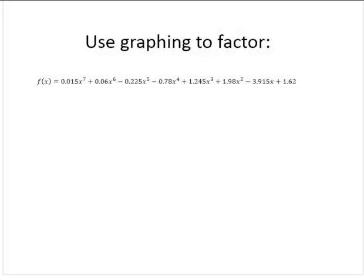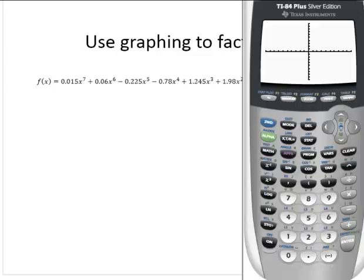Here we're asked to use graphing to factor a polynomial: f(x) = 0.015x^7 + 0.06x^6 - 0.225x^5 - 0.78x^4 + 1.245x^3 + 1.98x^2 - 3.915x + 1.62. That's a lot to deal with, and we certainly would not want to try to factor this by hand—it would be very difficult. So we're going to use our calculator and input the function.